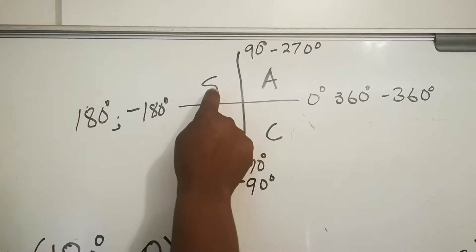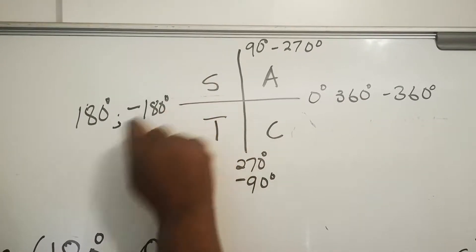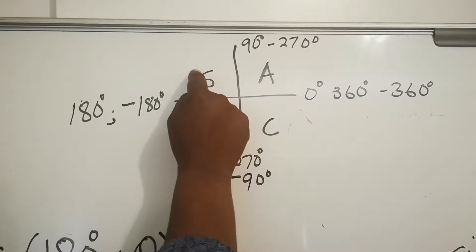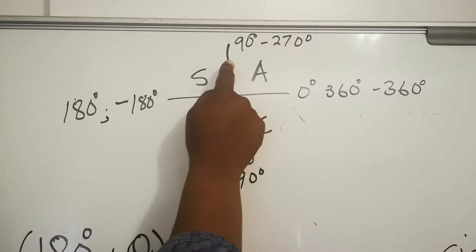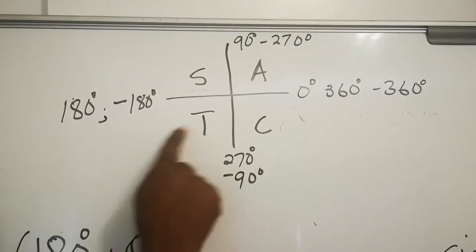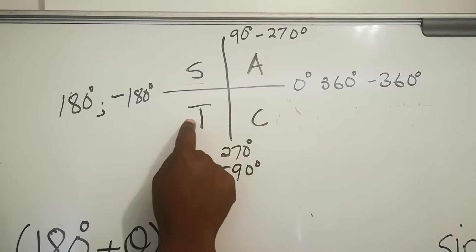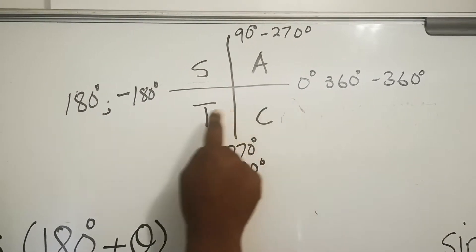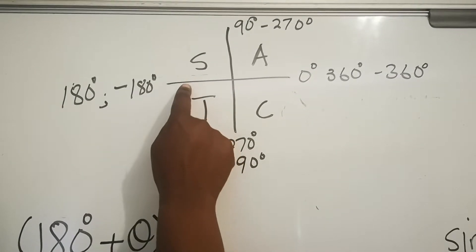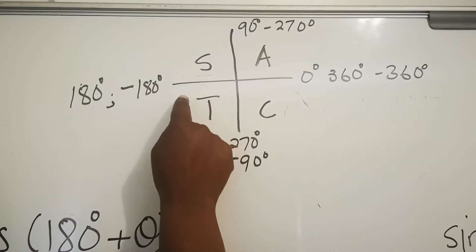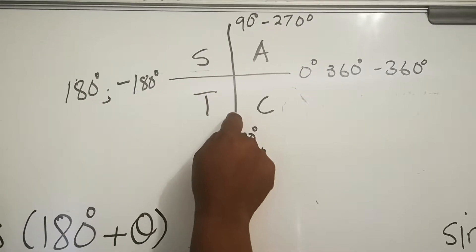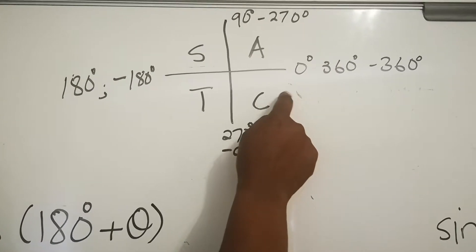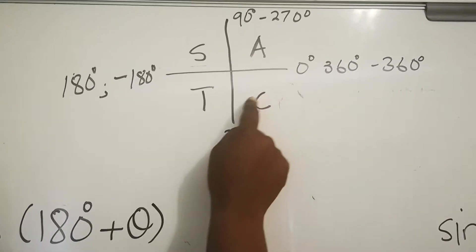The second quadrant — S is for sine. Only sine is positive in the second quadrant. The second quadrant is any value smaller than 180 but bigger than 90. In the third quadrant, T stands for tan. Only tan is positive in the third quadrant; cos and sine are negative. So tan covers angles greater than 180, meaning a number that is 180 plus or a number that is 270 minus.